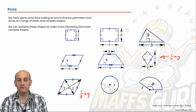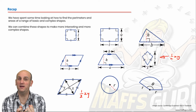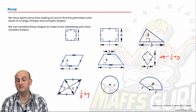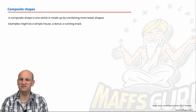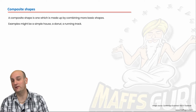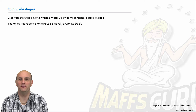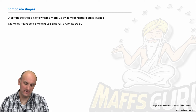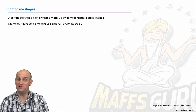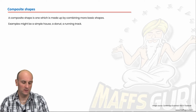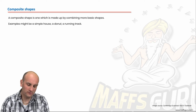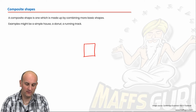Now, knowing the areas of these basic shapes means we can combine them to make something called a composite shape. A composite shape might well be a simple house. I desperately wanted to be an architect but then I found out I'd have to spend about 12 years in uni, and so I became a teacher — and spent the rest of my life in school.